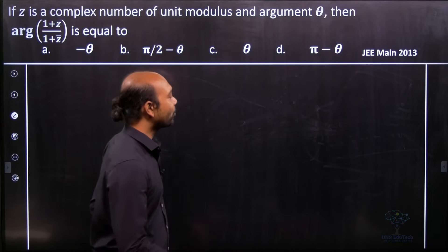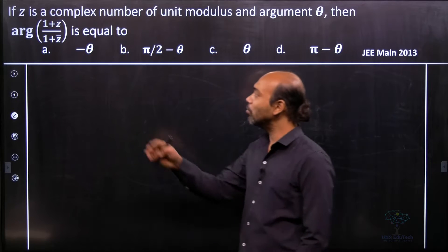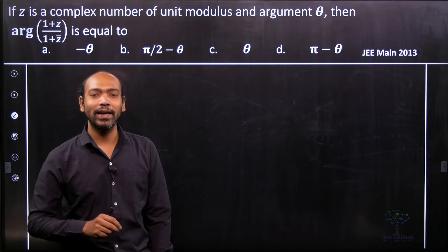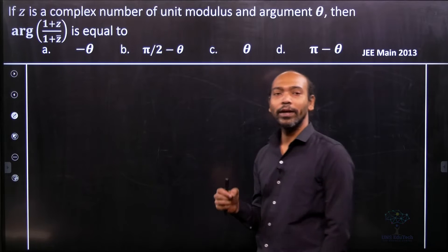Hi all, in this particular problem, the argument of the new complex number 1 by z and 1 by z bar, where z bar means the conjugate, are what we are going to find out.